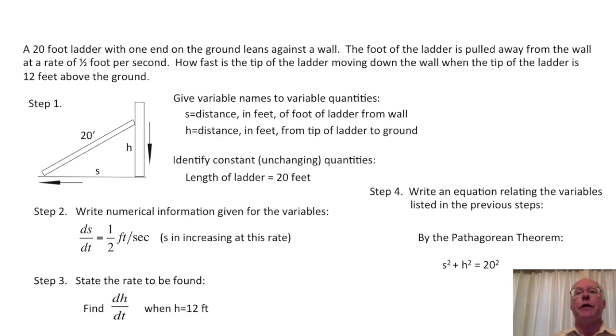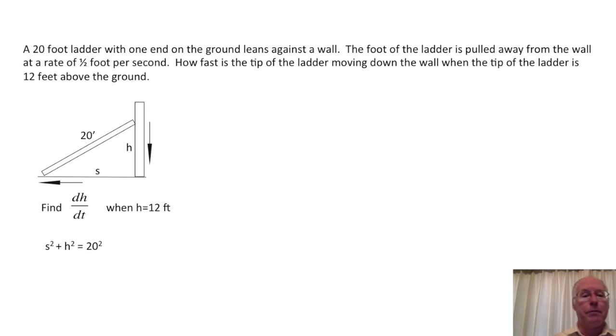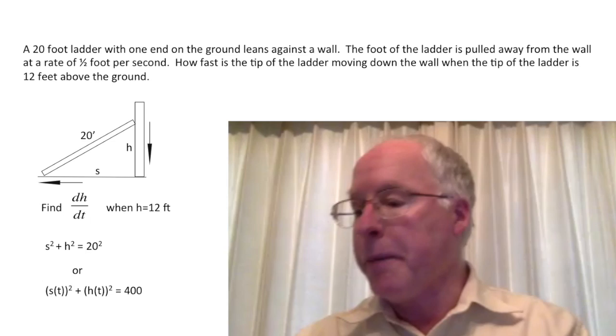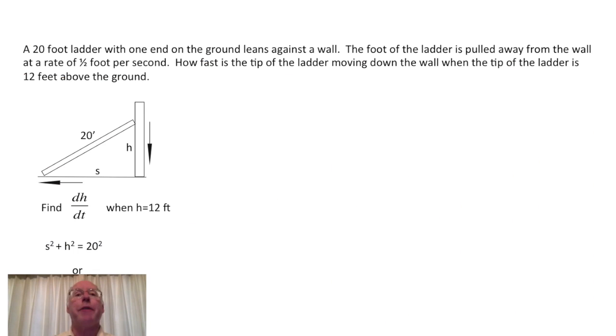Now we're going to clear the workspace to give us room to continue. Remember, you can always back up in the video to see previous steps again. We've kept the information about what it is we wish to find, that is, dh/dt when h equals 12, and what we've found about the relationship between the variables. In related rates problems, everything that changes, changes as a function of time. This is why we can take derivatives with respect to time. To remind us of this t dependence, and maybe to help with the next step, we can write s as s of t and h as h of t. This makes the t dependence clearer.